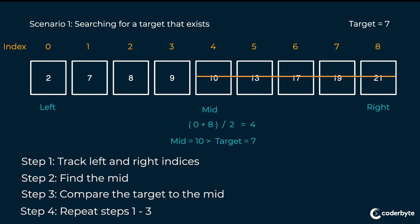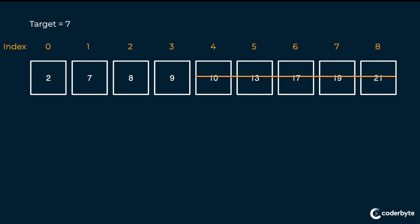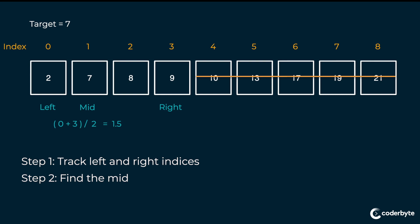We can now repeat the same steps for the remaining section of the array. We reassign our left and right markers and determine the new mid. In this scenario, zero plus three divided by two equals 1.5. Because we can't have half an element, we round down and set our mid to the element at index one. We know that seven equals seven, so we found our target in just two passes.